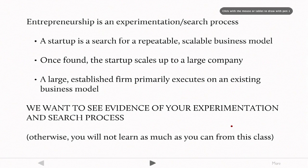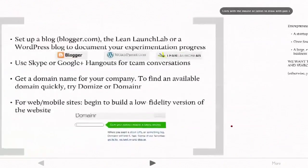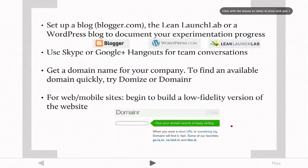In this class we want to see evidence of your experimentation and search process, otherwise you're not going to get as much out of the class as you could. So we want to have some way to continuously check in on how you're doing in that process. What I want you to do is set up a blog or use the Lean Launch Lab website, or set up a WordPress, and document your experimentation throughout the class.